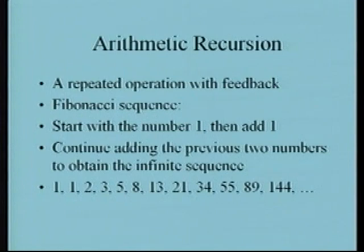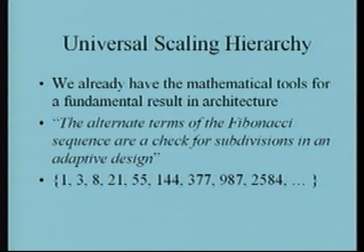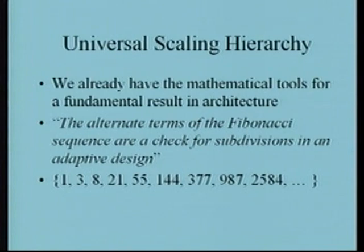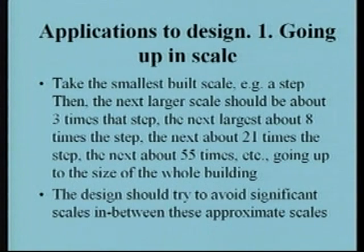There is a connection with the golden mean, which I will address later. After one page of work, I can present an important concept for architecture: the universal scaling hierarchy. In the Fibonacci sequence we have a very nice tool. If we take the alternate terms of the Fibonacci sequence, we can use them as a check for subdivisions in an adaptive design. Taking every other term, I get the infinite sequence: 1, 3, 8, 21, 55, 144 — and I propose to use these as a check for subdivisions in an adaptive design.